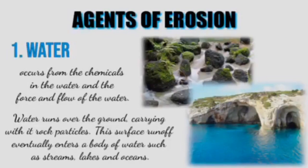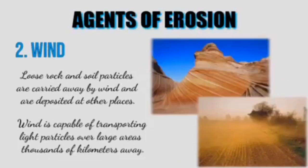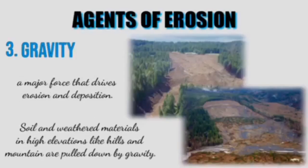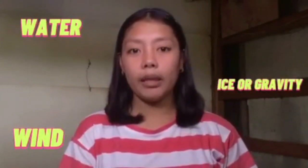Erosion takes place due to the following agents: water, wind, and gravity. Gravity is a major force that drives erosion and deposition. The agents of erosion are water, wind, and ice or gravity.